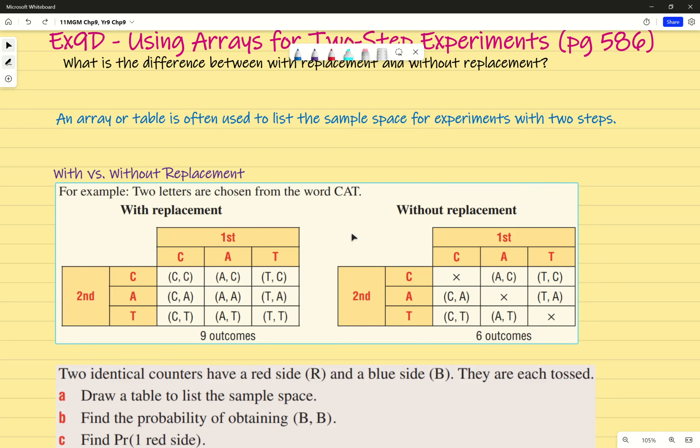The example I've got here: two letters are chosen from the word CAT. It's a very basic example, but there are only three letters. What we've done is the first draw, first letter chosen in this column, and then the second letter in the rows. For example, you could theoretically get C, C, because you draw a C, you put it back, and you draw another C. That works.